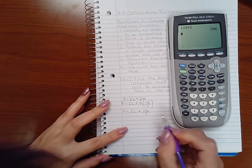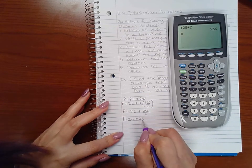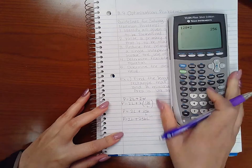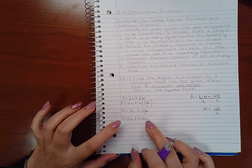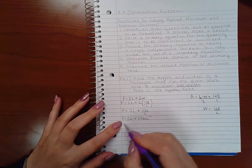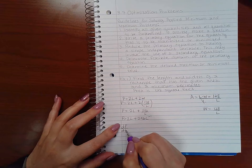Let me see, 128 times 2, yes, 256 over L. Another way of writing that is 2L plus 256L to the negative 1. Okay, so now since I want to minimize this, I need to take the derivative of this function.